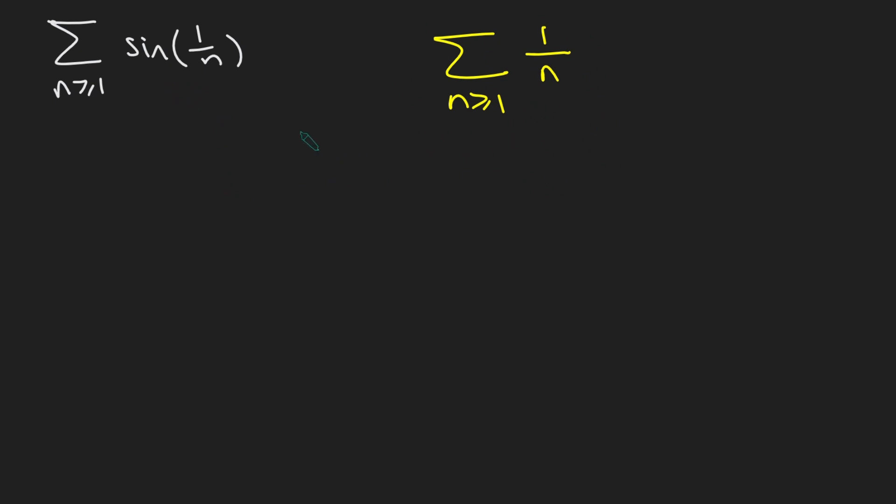However, that's not enough to say that this thing here diverges, because in fact this guy here is always strictly less than this guy here. So sine of 1 over n is strictly less than 1 over n. So perhaps this could just about converge, because we know this guy here barely diverges. It diverges really slowly.